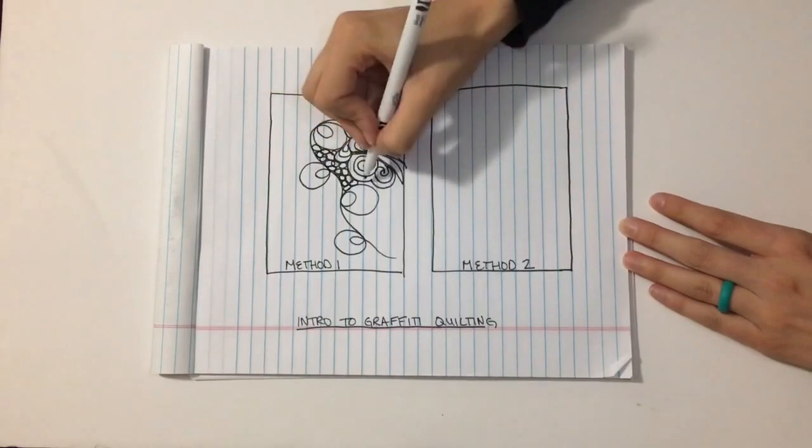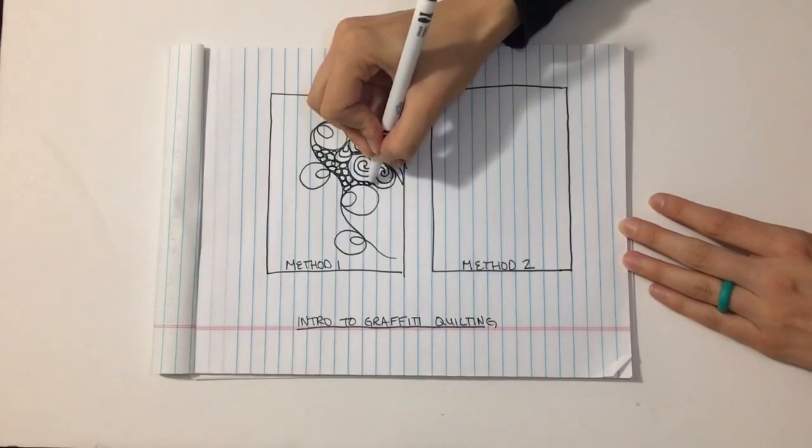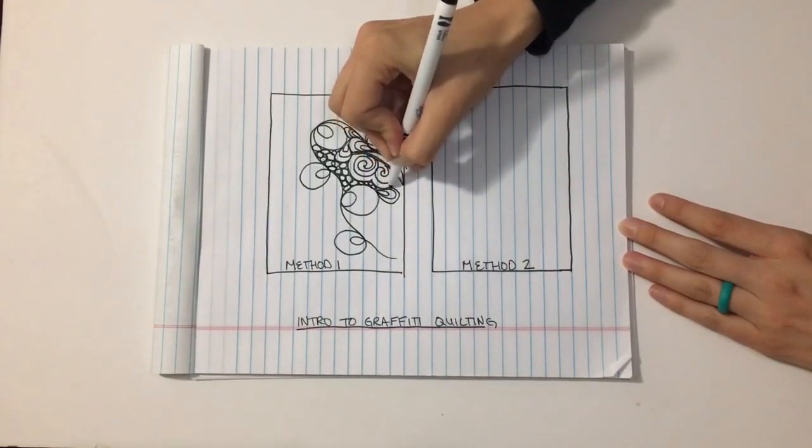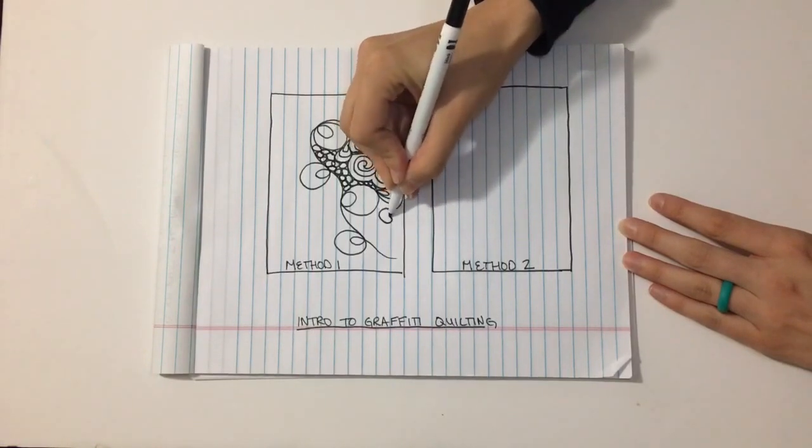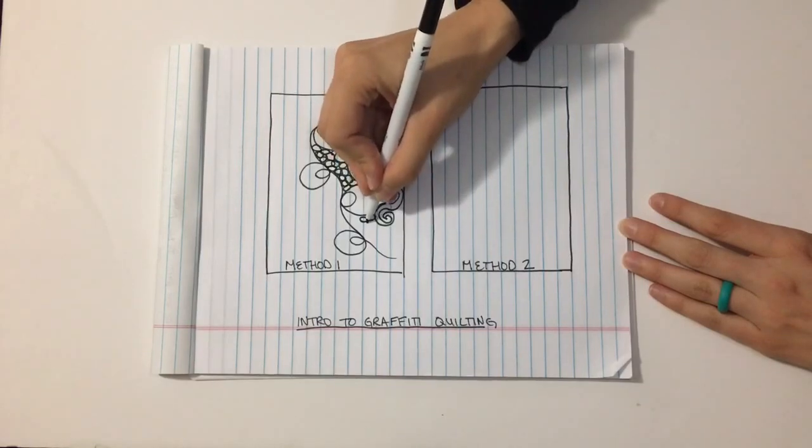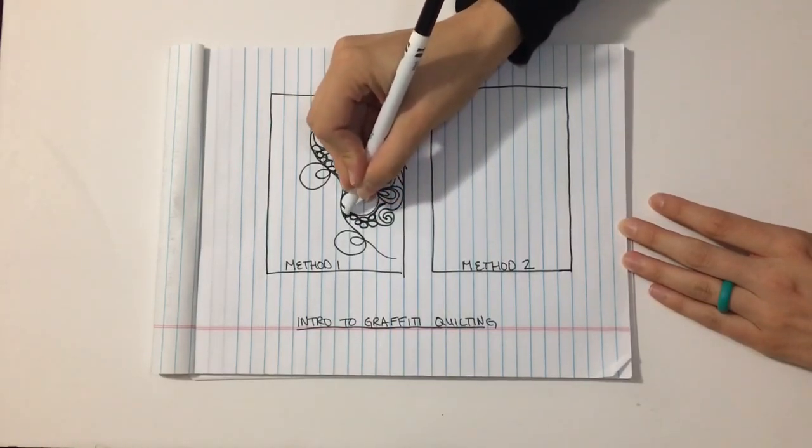So my three go-to's when I'm graffiti quilting are paisleys, swirls, and pebbles. And I just add them over and over again to fill in a space.